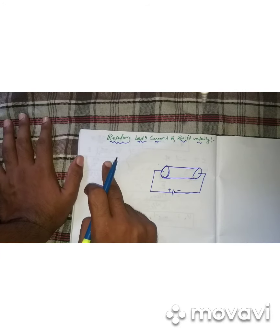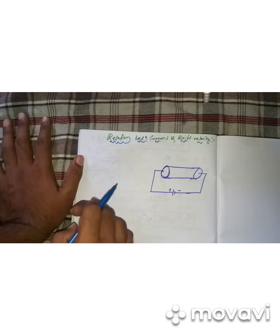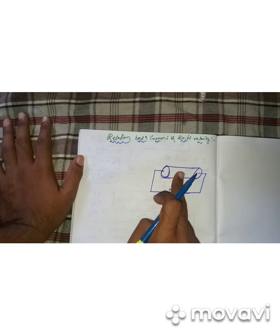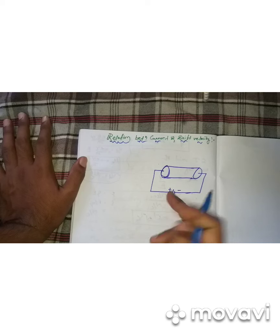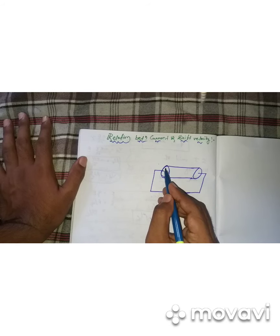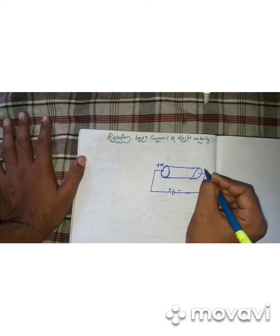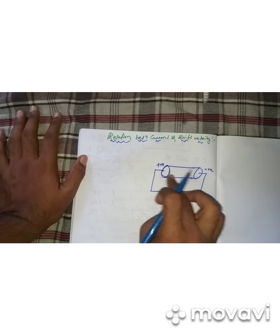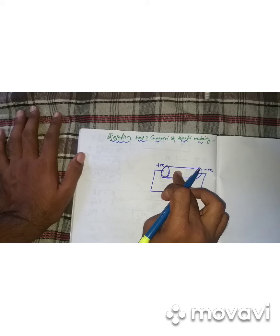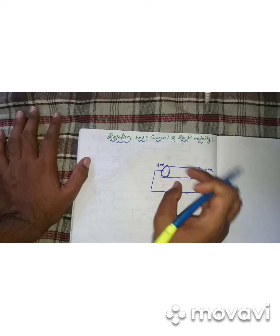Good evening students. Today I will discuss the relation between electric current and drift velocity. Assume a conductor connected to a battery with a positive terminal and a negative terminal, so one end of the conductor has a positive potential and the other end has a negative potential. This conductor consists of a number of free electrons, denoted by N, and the conductor has length L and area of cross-section A.